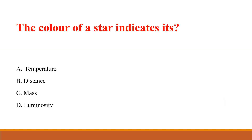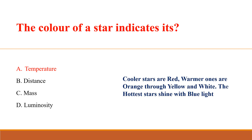The color of a star indicates its? Answer: D. Temperature. Cooler stars are red, warmer ones are orange through yellow and white, and the hottest stars shine with blue light.